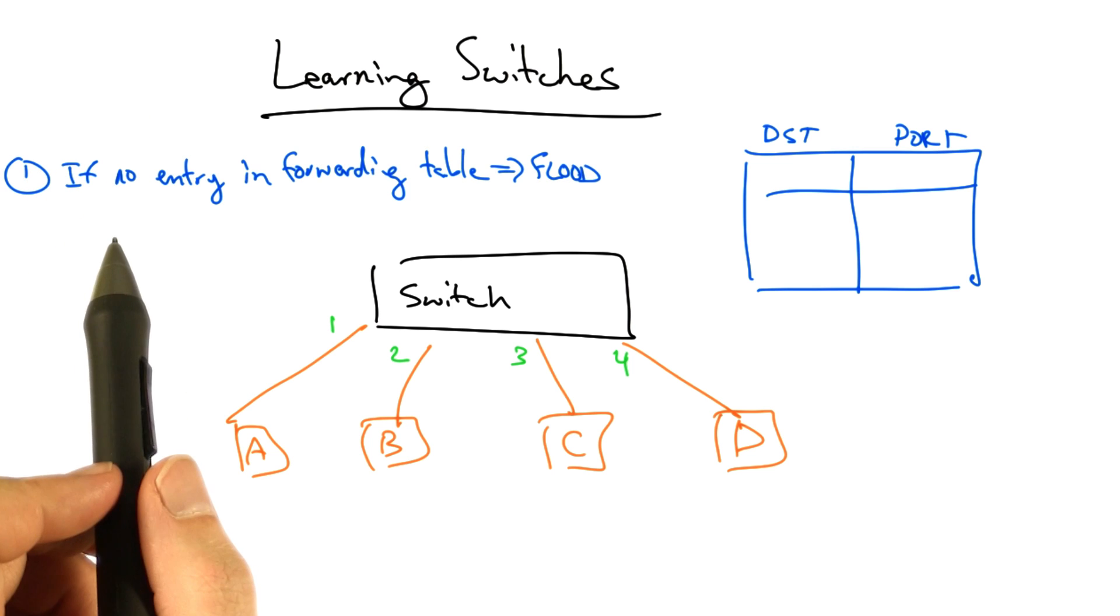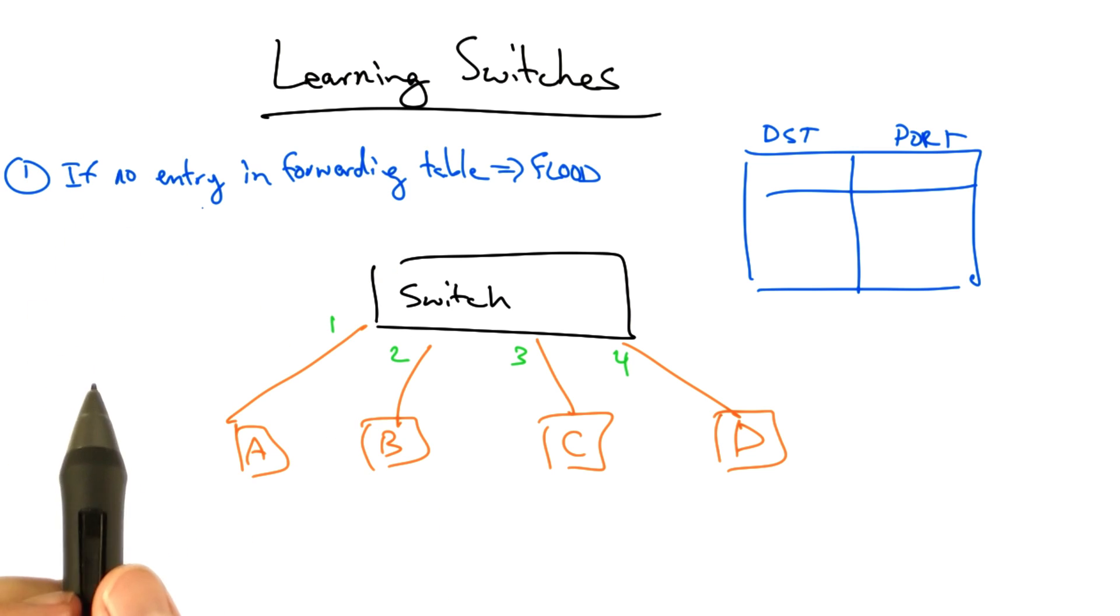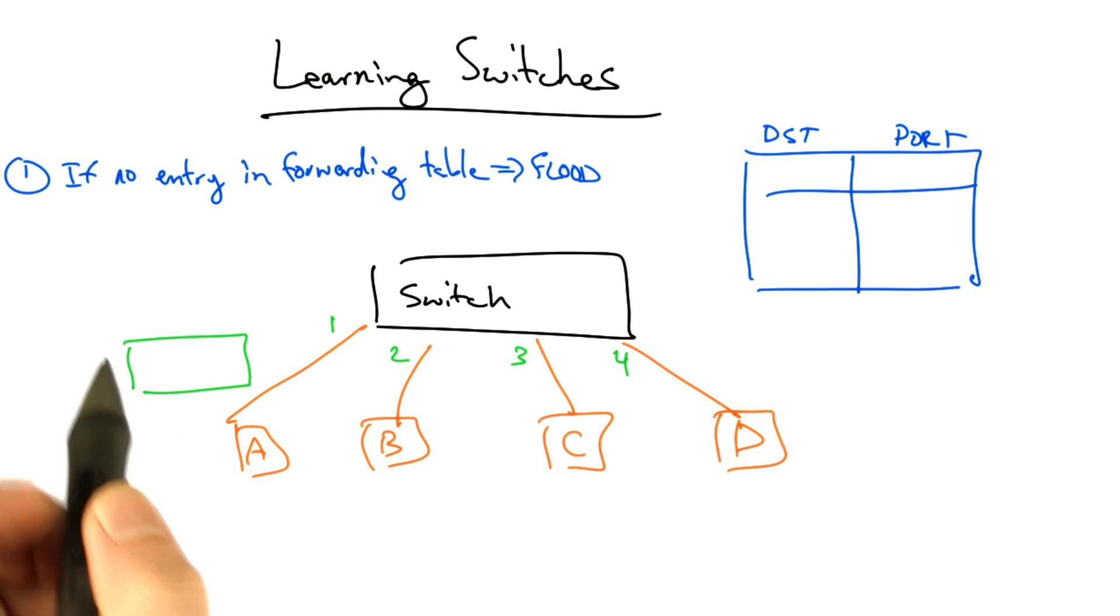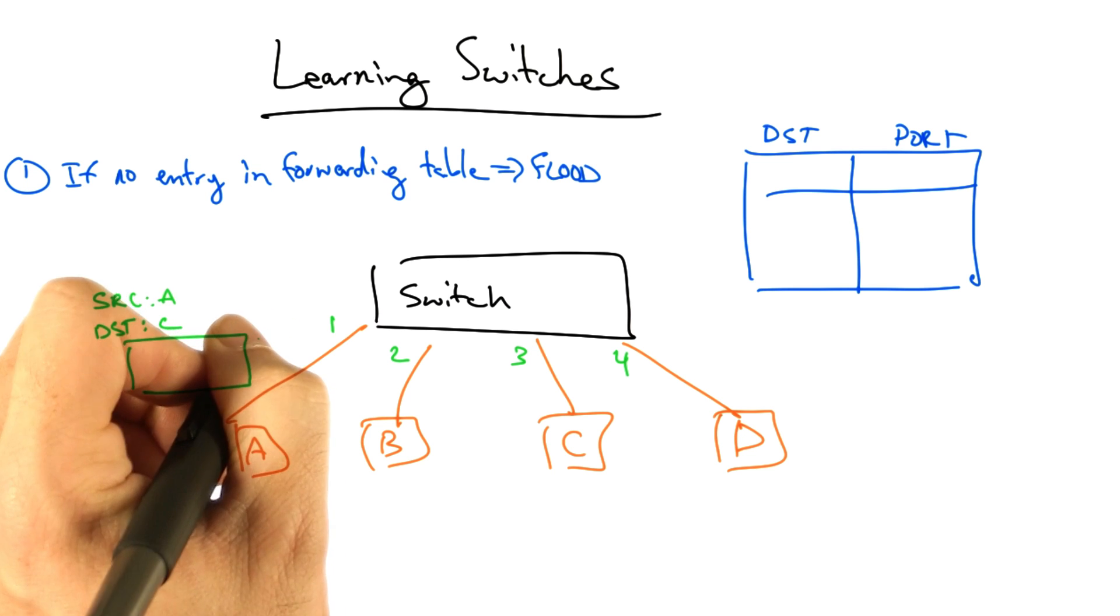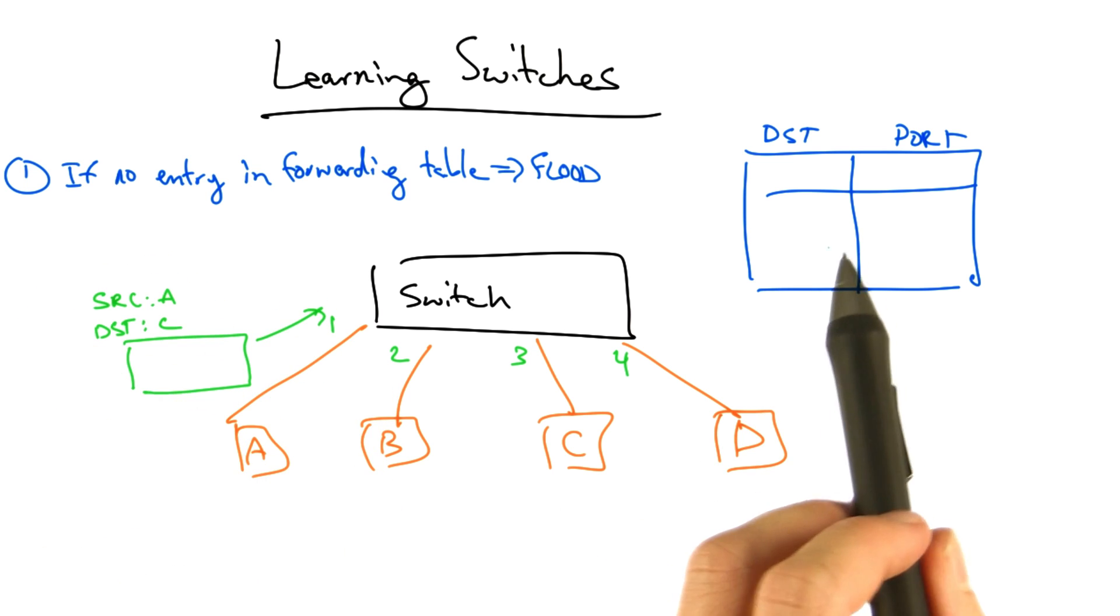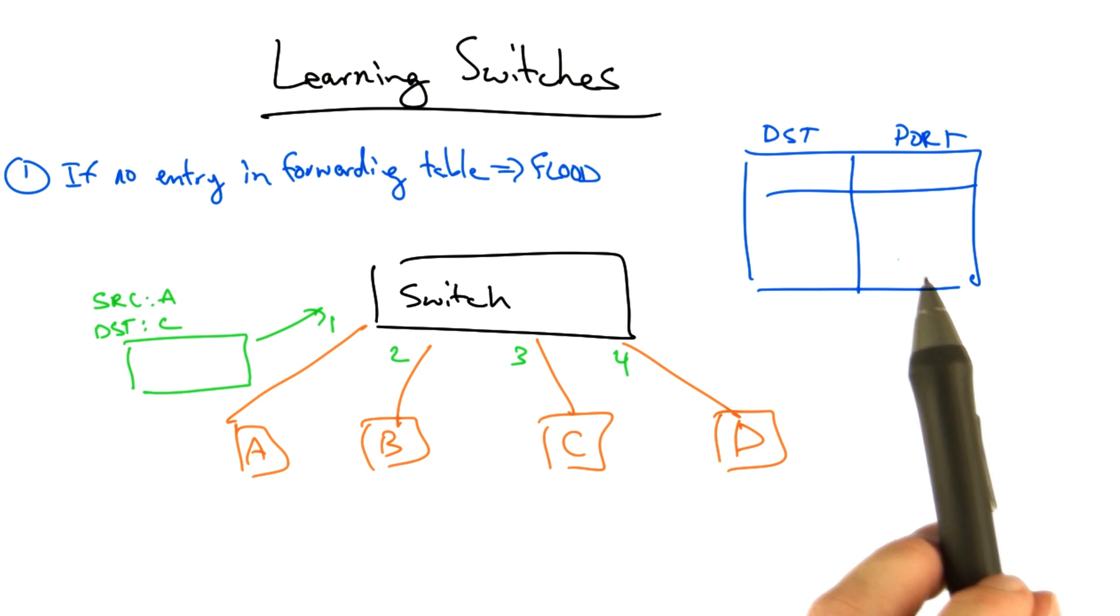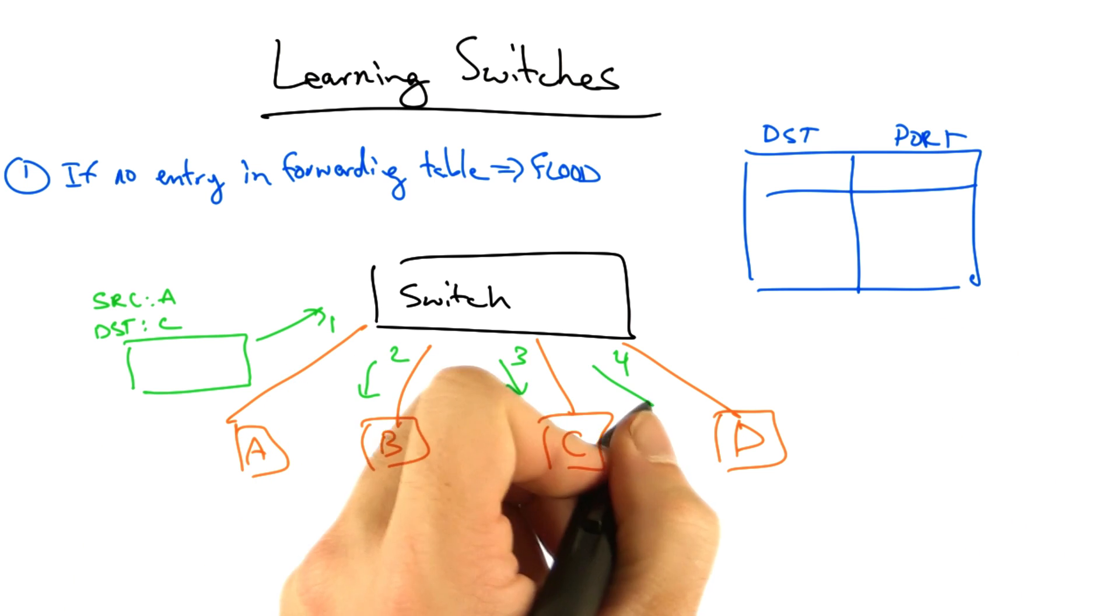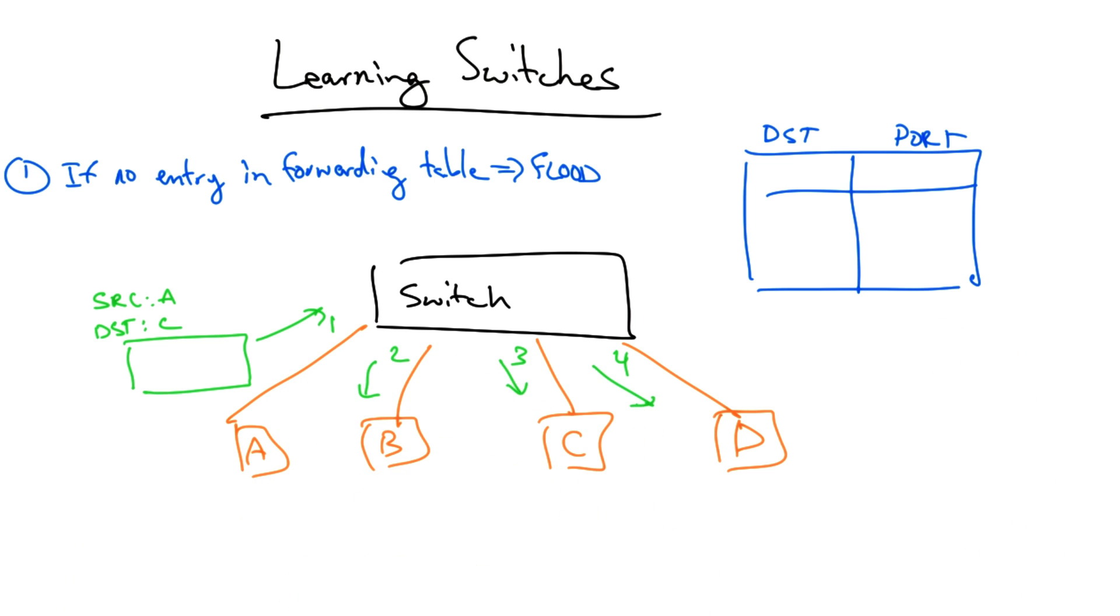Initially, the forwarding table is empty. So if there's no entry in the forwarding table, the switch will simply flood. Let's look at a quick example. If host A sends a frame destined for host C, then initially the switch has nothing in its table to determine where that frame should be sent, so it will flood the frame on all of its outgoing ports.